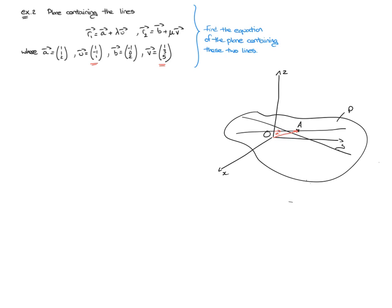It also has a direction vector on it, U, which I'm drawing here. The second line has a point B on it, which I'll draw here. We're given that point's position vector, which is the vector B. And it also has a direction vector, V. So that's the information we're actually given.